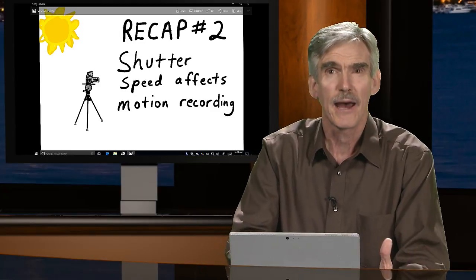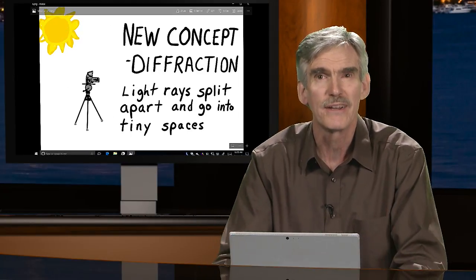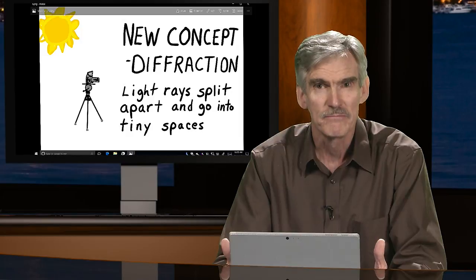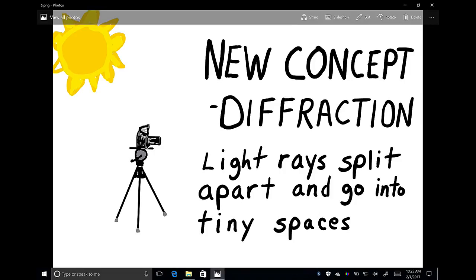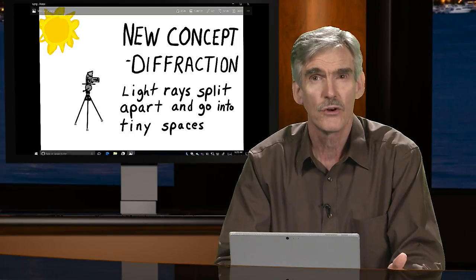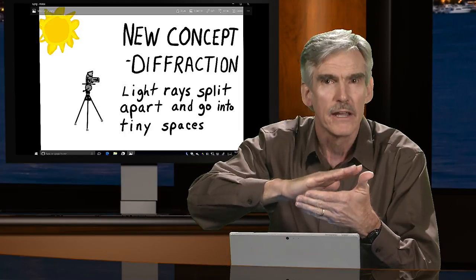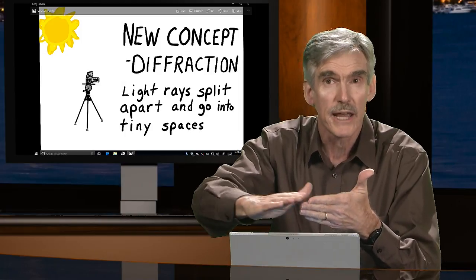That's the end of the recap, so let's get started with a new concept today: diffraction. We talked about reflection and refraction — bending of light — so diffraction is a new concept where light rays split apart and go into tiny little spaces. The best way to illustrate this is using an example of paper moving over a sharp edge such as a razor blade or exacto knife, where it could split the paper in half.